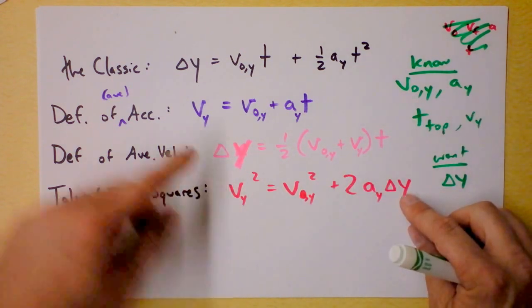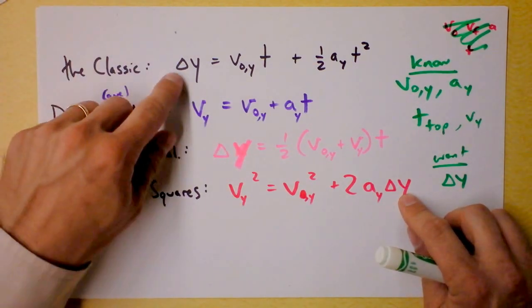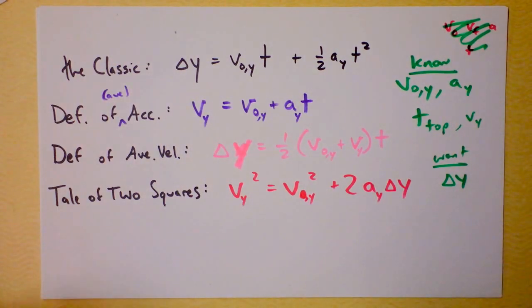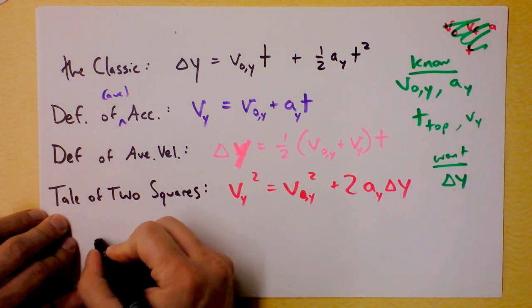In fact, we could use any equation that has delta y in it. This one, this one, or this one. I'm going to choose this one right here, because I like to go back to the classic, because I named it the classic. Or maybe it's the other way around. So what I'll do is I'll plug in the time.